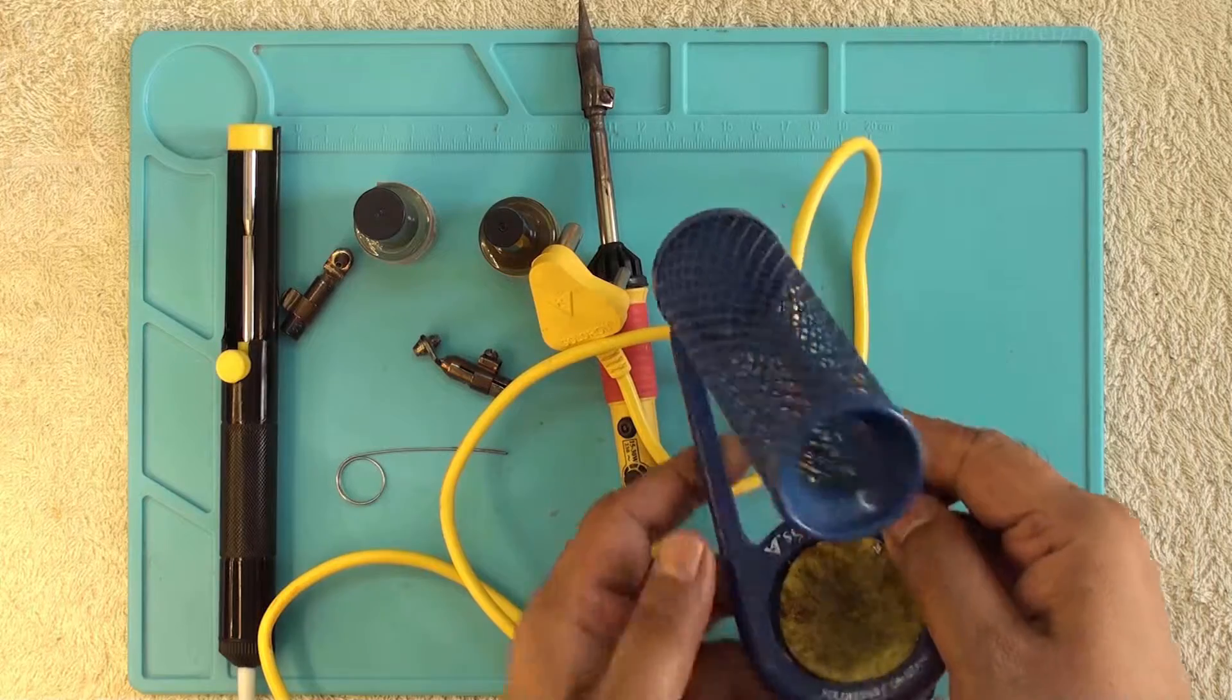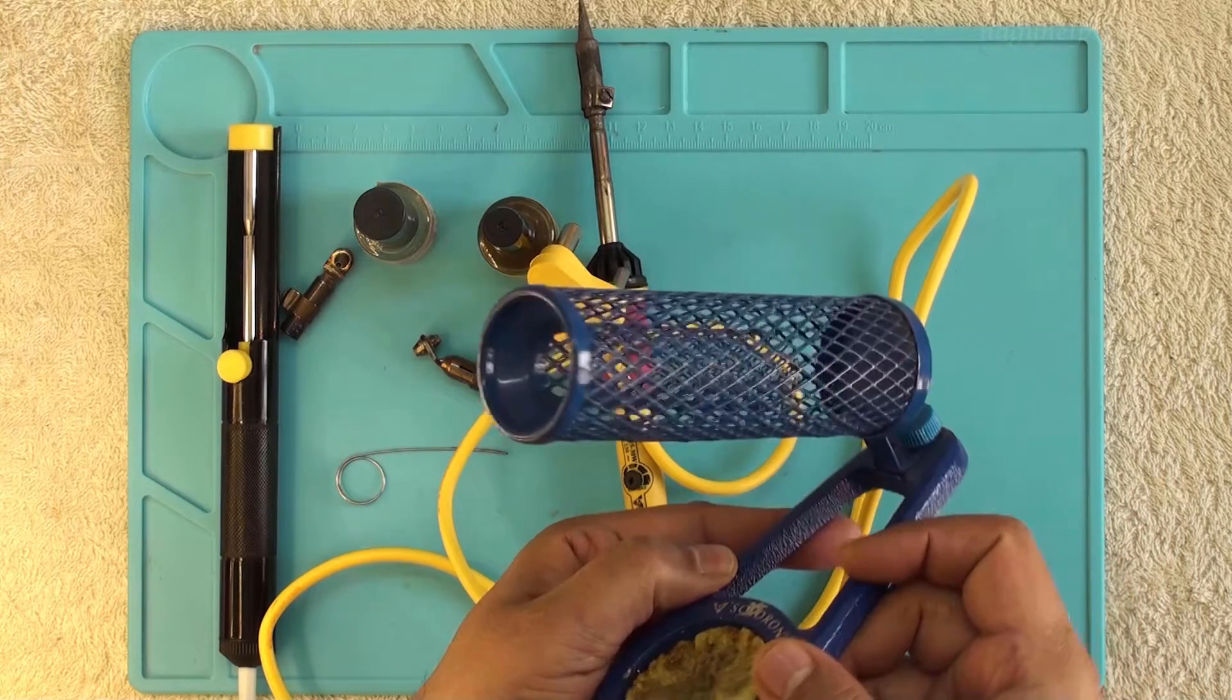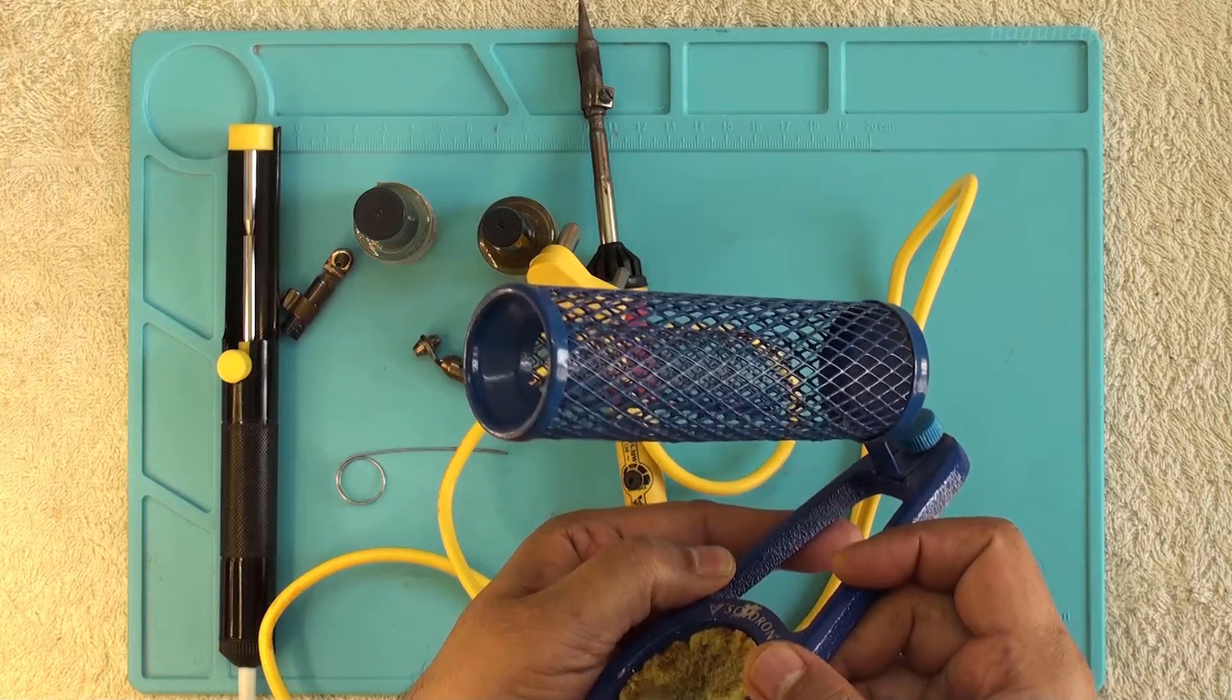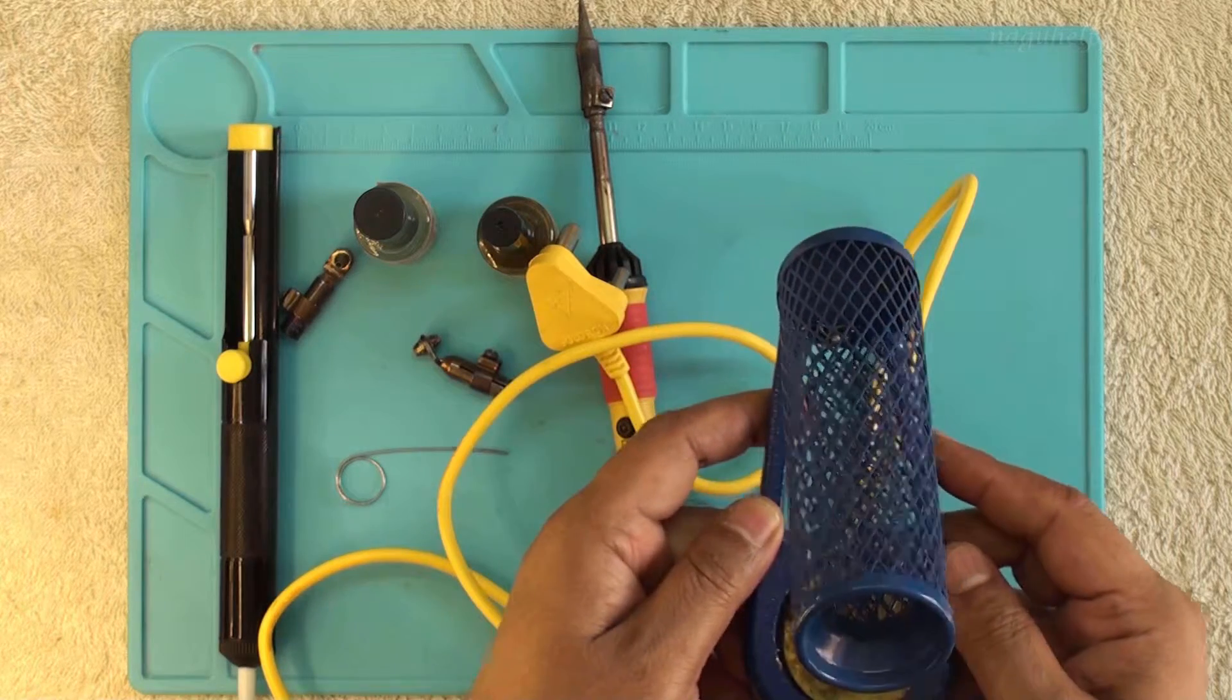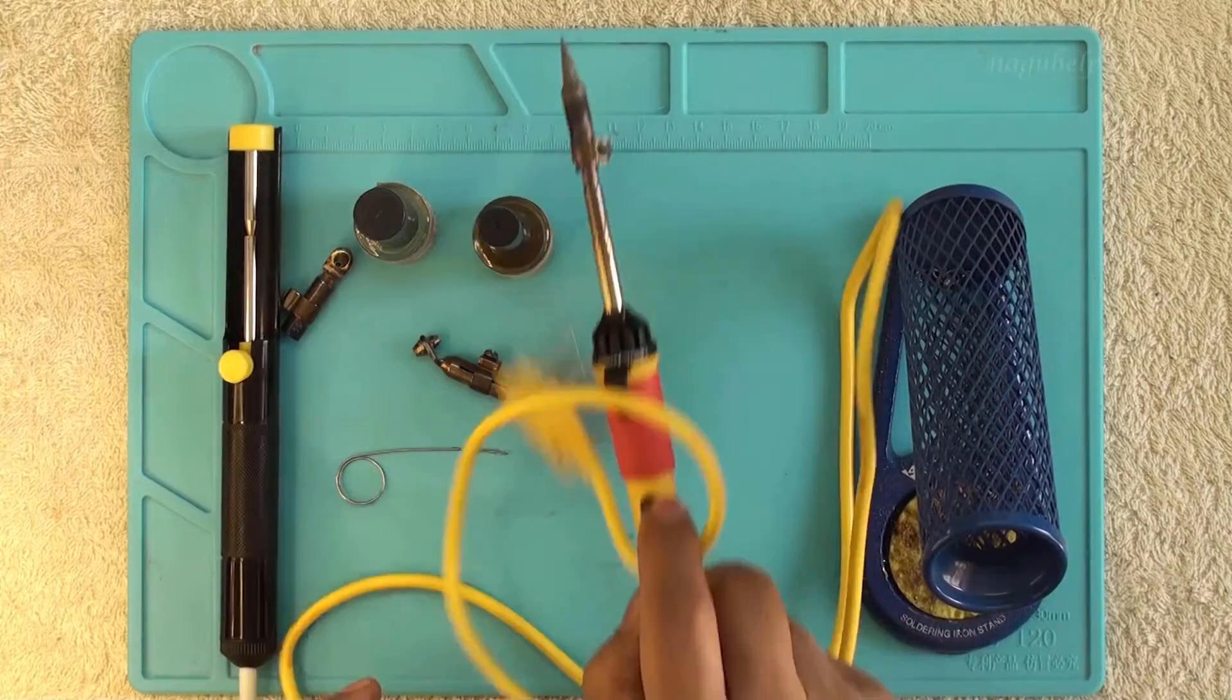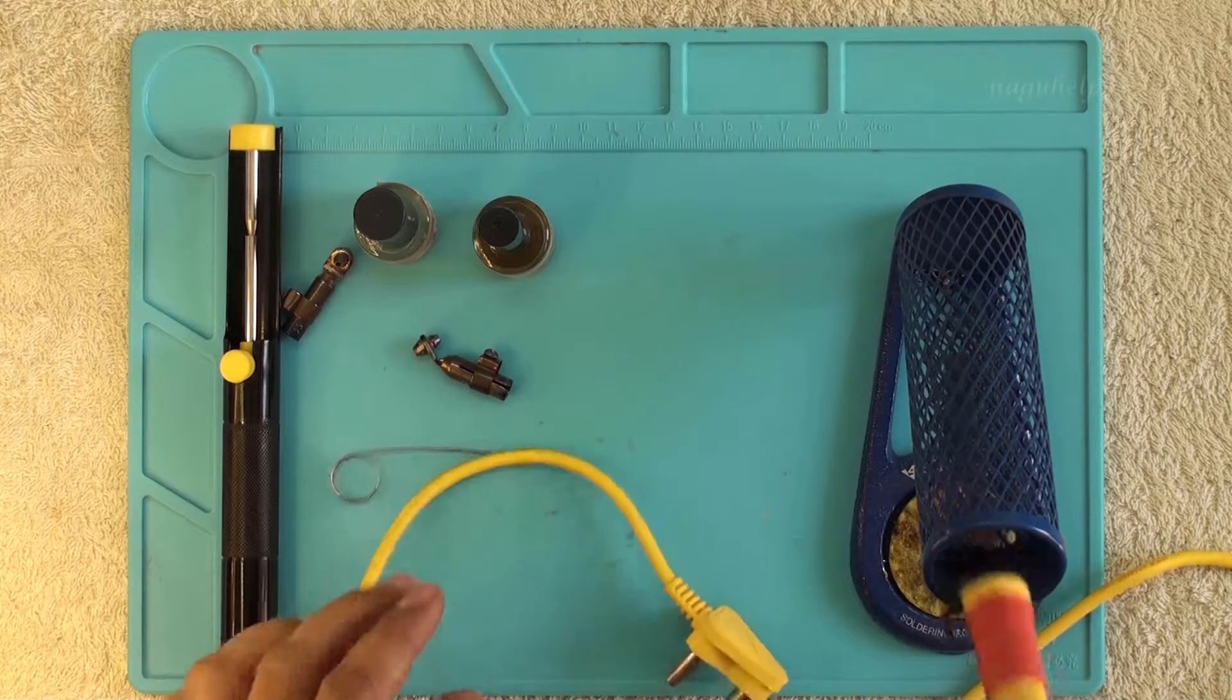This is the soldering iron stand which is quite sturdy. Inside the outer mesh, there is another mesh which more or less keeps the soldering iron in the center and soldering bit does not touch anywhere. They have provided a sponge along with the stand to clean soldering iron tip.